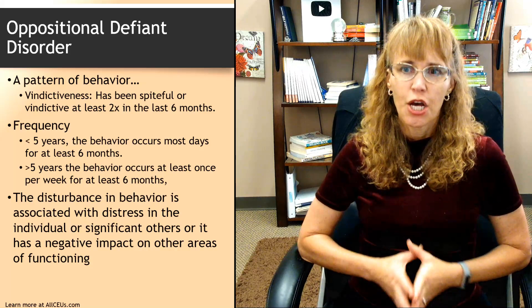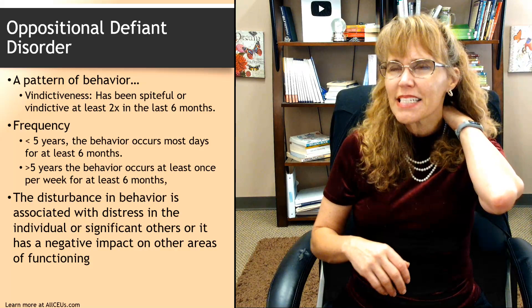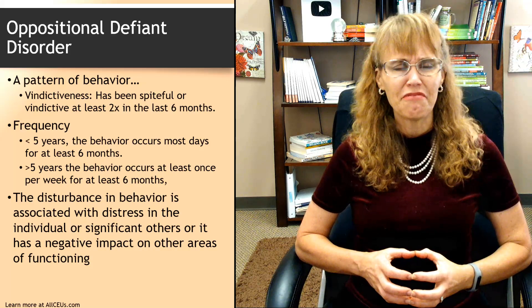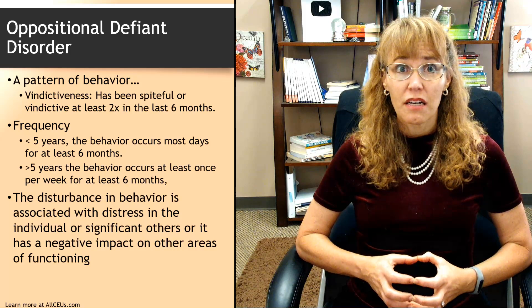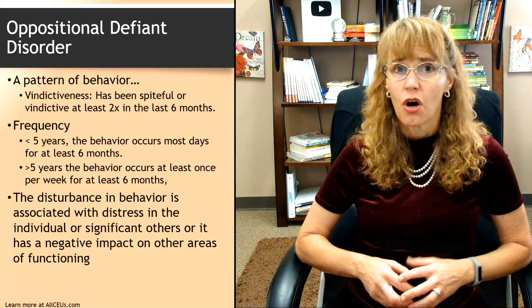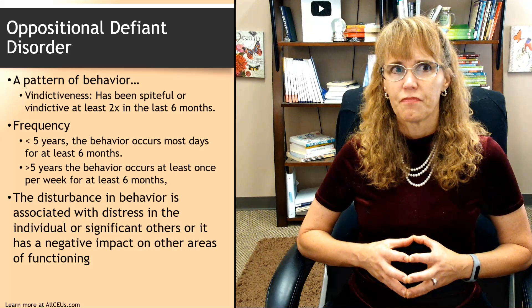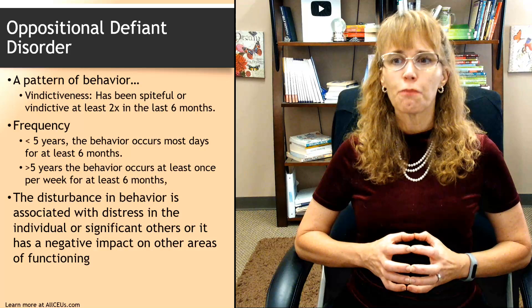Vindictiveness — the person has been spiteful or vindictive at least two times in the last six months toward the identified person or persons. We see vindictiveness not just in children but also in adults on social media, through trolling, flaming wars, and cancel culture. The question is whether the person has been vindictive toward their target at least twice in the past six months.